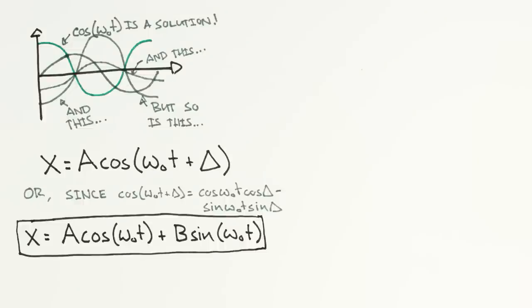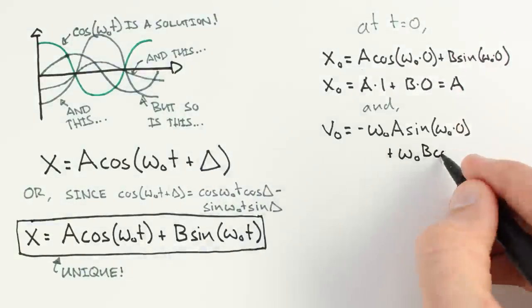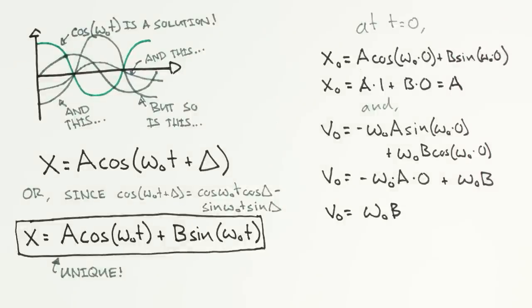Using techniques from differential equations, we can show that this is the unique or only solution to our system. Given an initial position and velocity, we can solve for a and b to determine how our oscillator will move in specific problems.